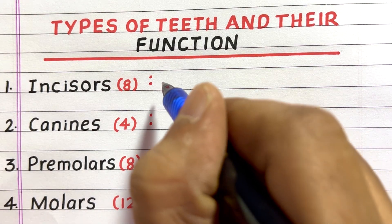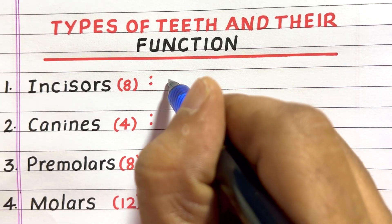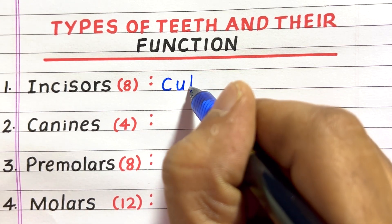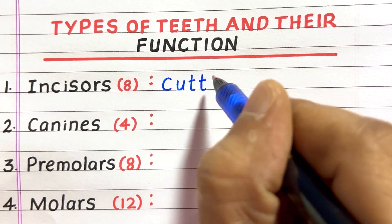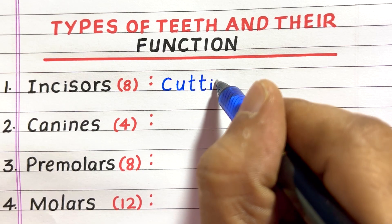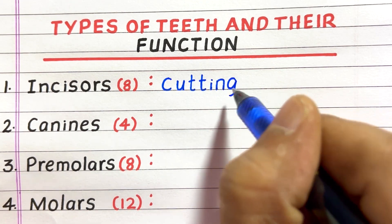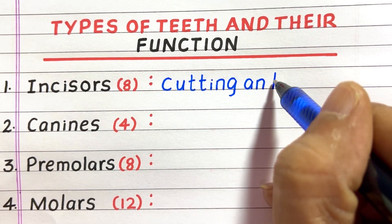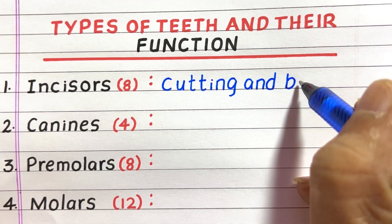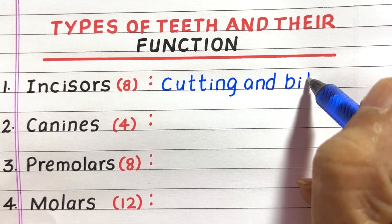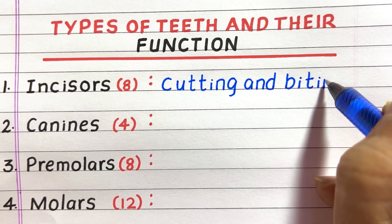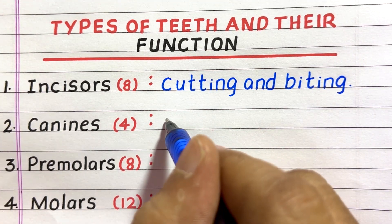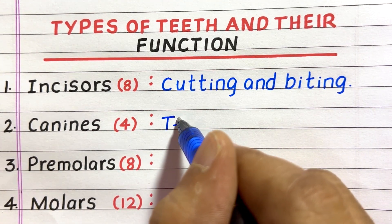Hello everyone, welcome to my channel 10 Lines Essay. In this video, I'll write about different types of human teeth and their functions. The first type of teeth in humans is incisors — they are eight in number, and their main function is cutting and biting.